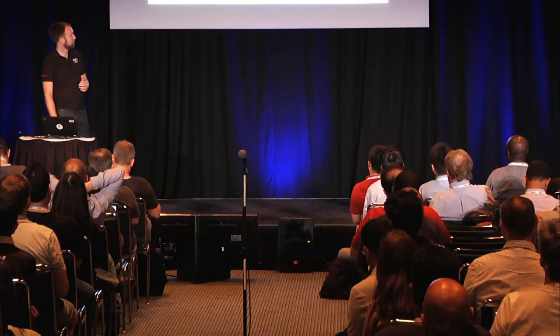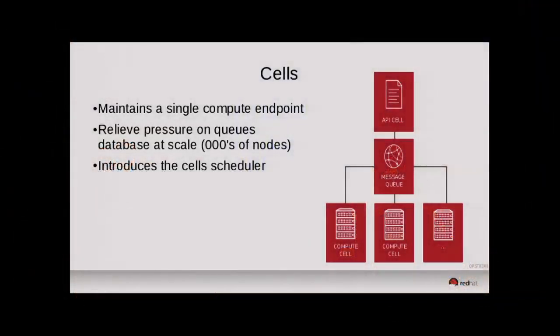There's an additional layer of scheduling implicit in cells. A new service — the Nova Cells service — is introduced into the environment and runs in each cell. We have the API cell at the top, a message queue in between, and then multiple compute cells. Looking at the API cell, we have a load balancer, multiple API server instances, a message queue, and Nova Cells at the bottom with its own filter scheduler, responsible for talking through another message queue and placing requests on one of the compute cells.